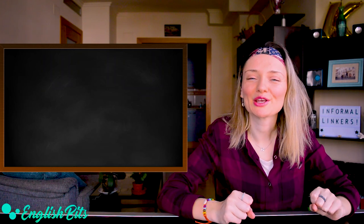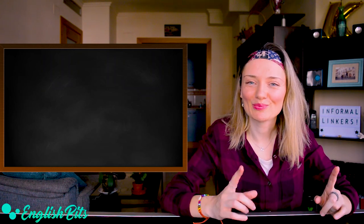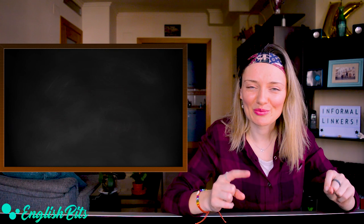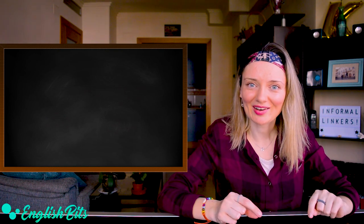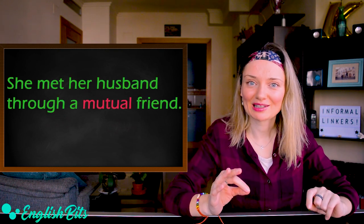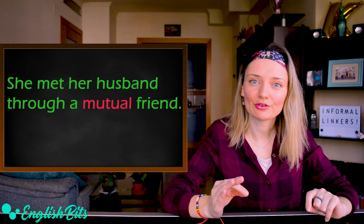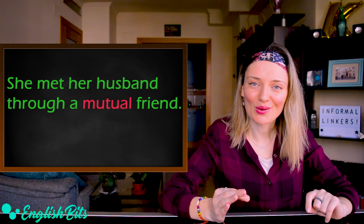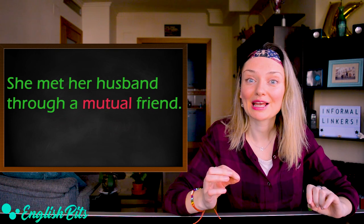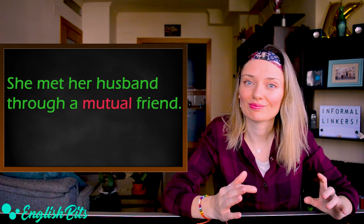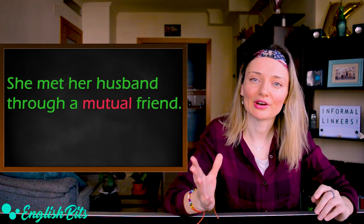Before we start, I'm going to give you the correct answer to the bonus question from the previous video. The correct answer is: she met her husband through a mutual friend. So, we don't say 'a common friend' but 'a mutual friend.' It's a collocation — remember? A mutual friend.